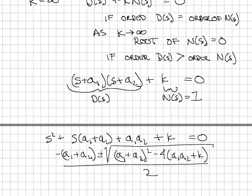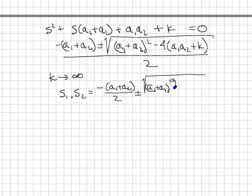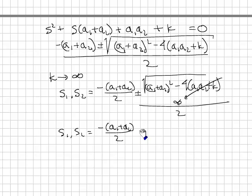Next, put this into quadratic formula. Now I want to solve this for extremely large values of k. So k goes to infinity, and I'm left with my solutions. s1, s2 equals minus (a1 plus a2) over 2, plus or minus the square root of (a1 plus a2) squared minus 4 a1 a2 plus k. But this is going to infinity. This whole thing is over 2. So you can see the solution, s1 and s2, looks like minus (a1 plus a2) over 2, plus or minus the square root of minus infinity. What does this tell us?